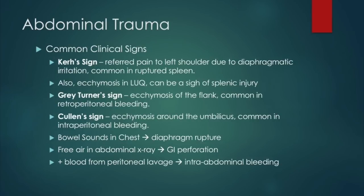Starting with abdominal trauma, there are some common clinical signs. Starting with Kerr's sign, this is referred pain to the left shoulder due to diaphragmatic irritation, which is common in a ruptured spleen. Also with a splenic injury, that can be ecchymosis or bruising within the left upper quadrant. The next sign is Gray Turner's sign, and this is bruising within the flank, common in retroperitoneal bleeding.